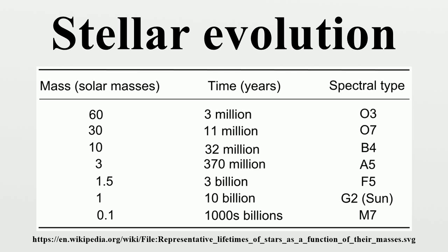In June 2015, astronomers reported evidence for population three stars in the Cosmos Redshift 7 galaxy at Z equals 6.60. Such stars are likely to have existed in the very early universe, and may have started the production of chemical elements heavier than hydrogen that are needed for the later formation of planets and life as we know it.